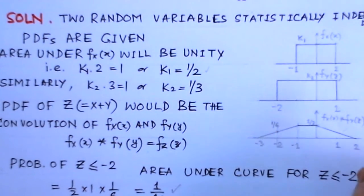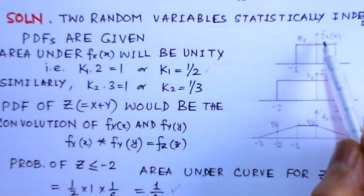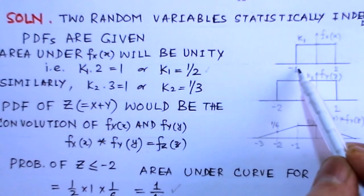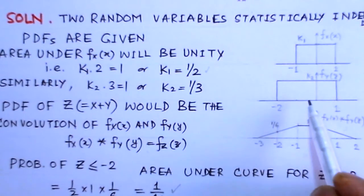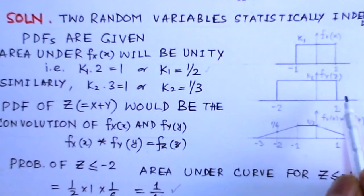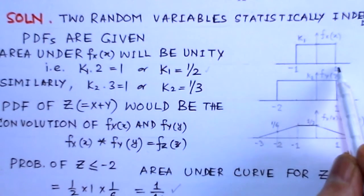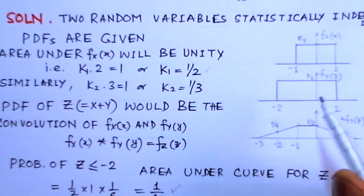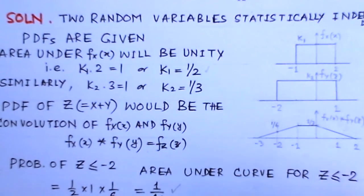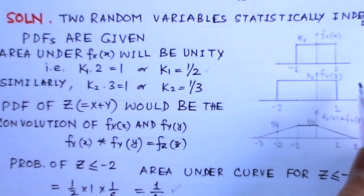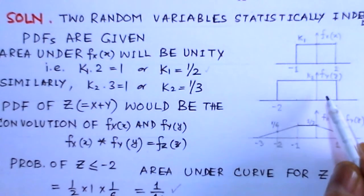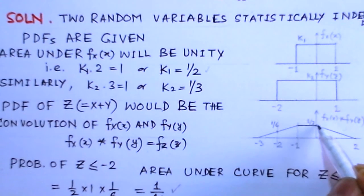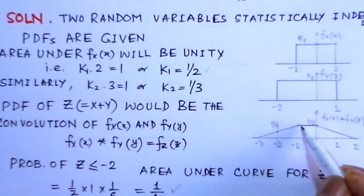When we integrate over the overlapping region, the magnitude of f_X is one-half and the magnitude of f_Y is one-third. So the product is one-half times one-third, integrated over ds from minus 1 to 1, giving a length of 2. This results in one-sixth times 2, which equals one-third. This is the amplitude of f_Z at the central region.